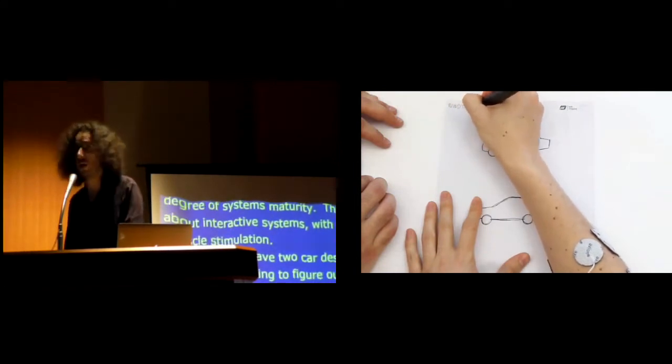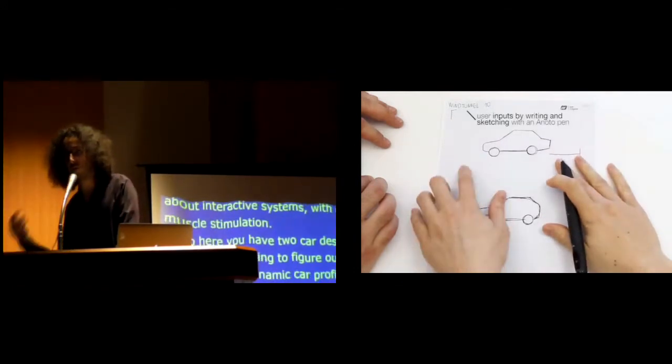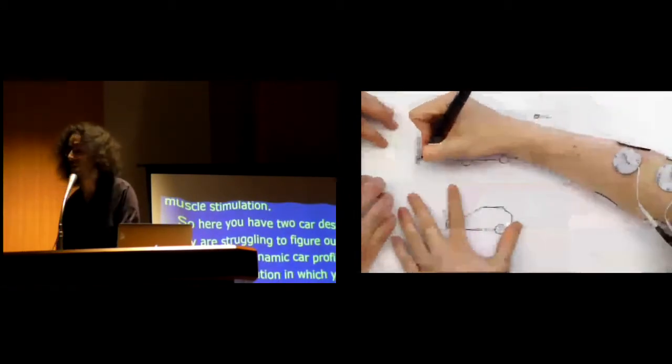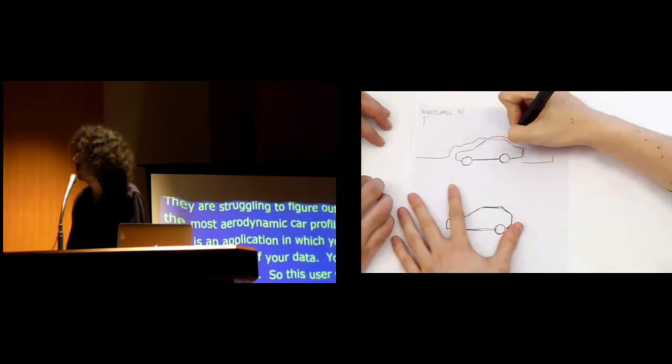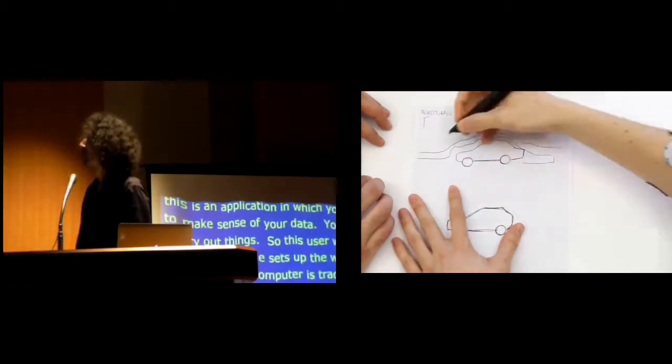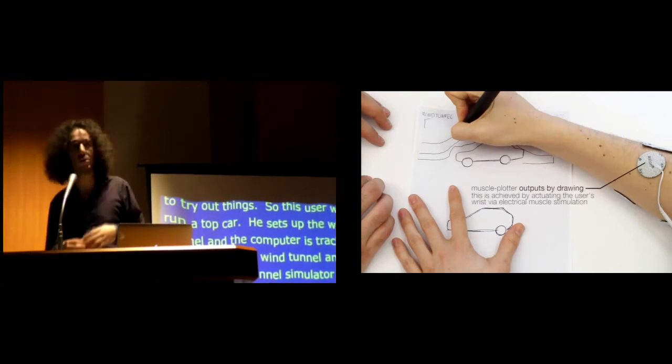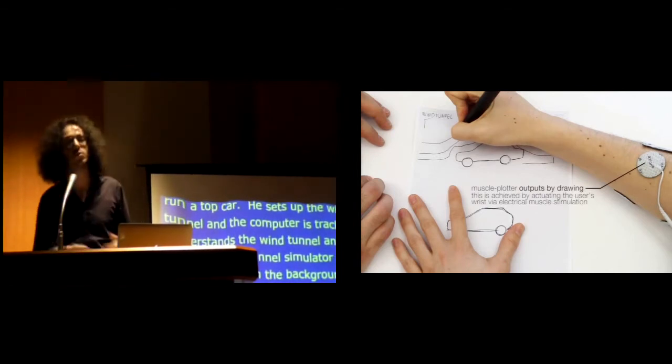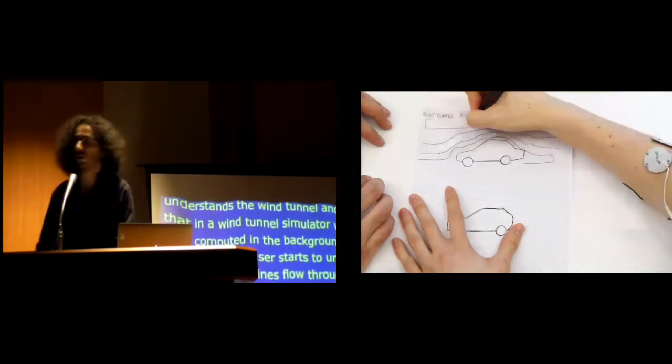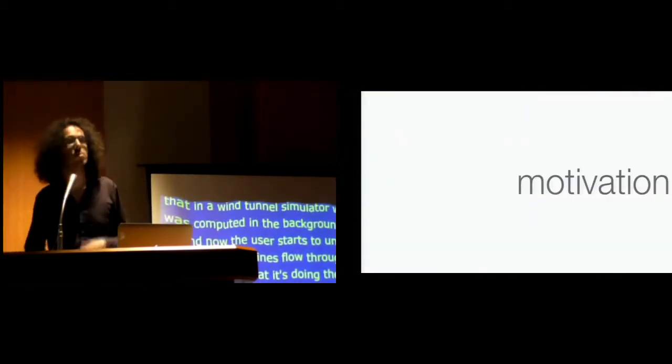So this user here is going to try out to run the top car through a wind tunnel simulator. He sets up the wind tunnel. He's using a nodo pen, so the computer is tracking, understands the command wind tunnel, and puts that into a wind tunnel simulator, which was already computed in the background. And now the user starts to understand how the streamlines flow through that car. The way that it's doing is that muscle plot is outputting by drawing, by controlling the user's wrist using electrical muscle stimulation to the left or to the right as to render the stimulation's output.